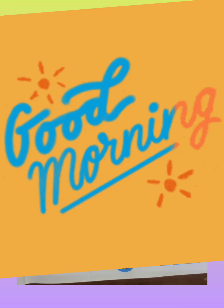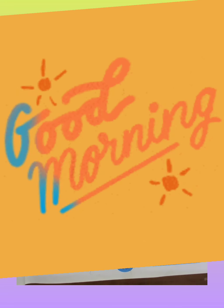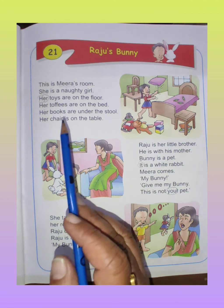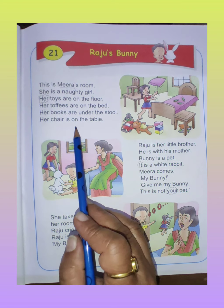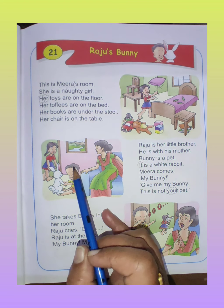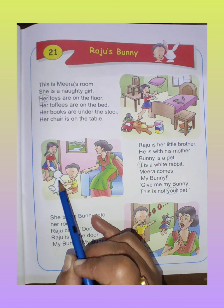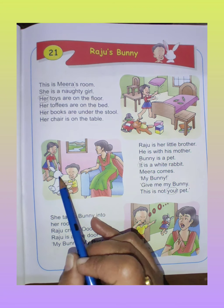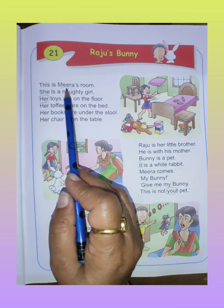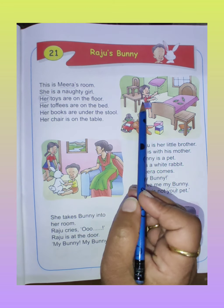Good morning everyone. Today we will start Lesson 21, Raju's Bunny. Open your book at page number 79. This story is about Meera and her brother Raju. Raju ka ek bunny hai — a rabbit pet whose name is Bunny. Now let's read the story.